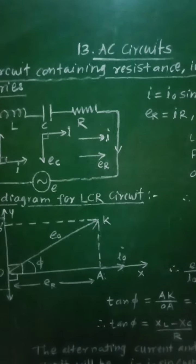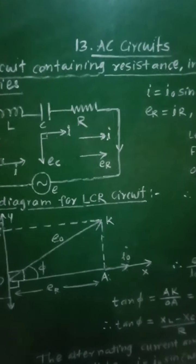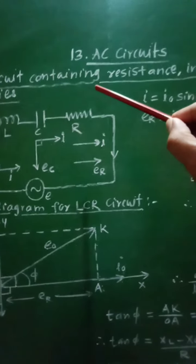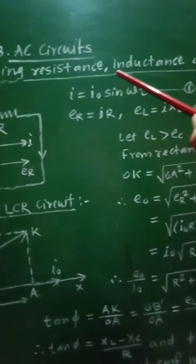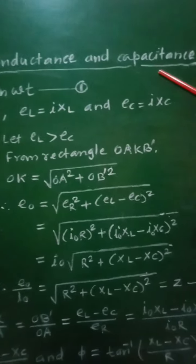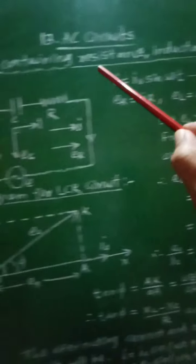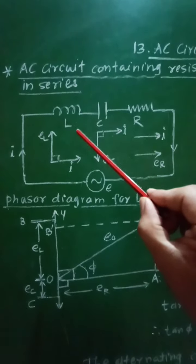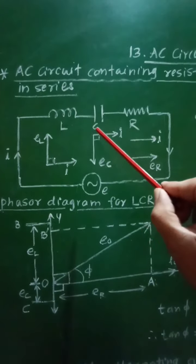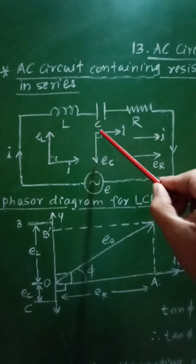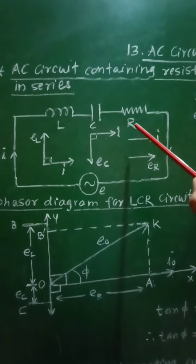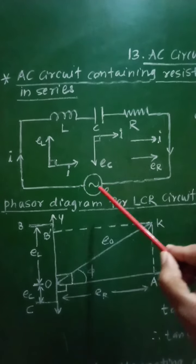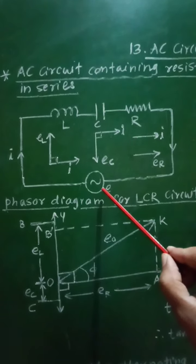Class 12th subject Physics, 13th chapter, AC circuits. From this chapter, let us see AC circuit containing resistance, inductance, and capacitance connected in series. Let us consider a pure inductor L, an ideal capacitor C, and a pure resistance R, connected in series with an alternating source of EMF E.